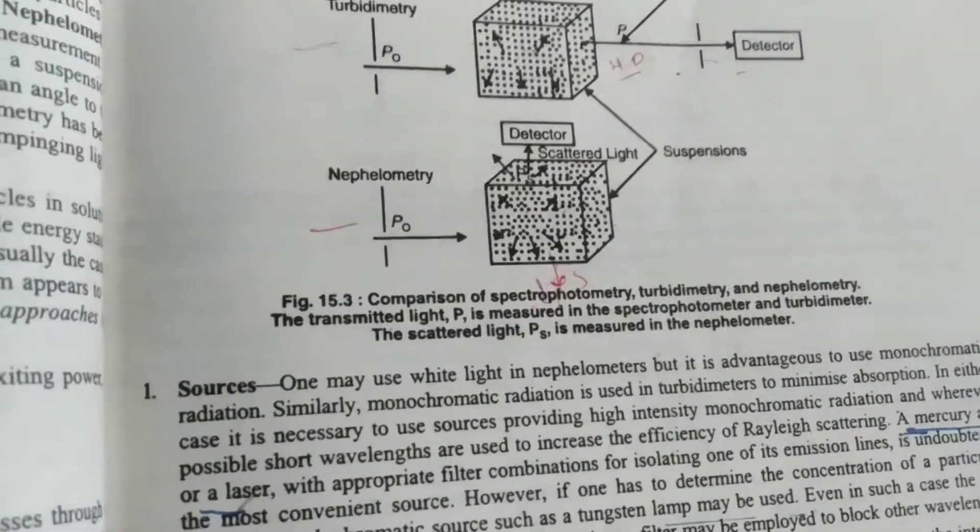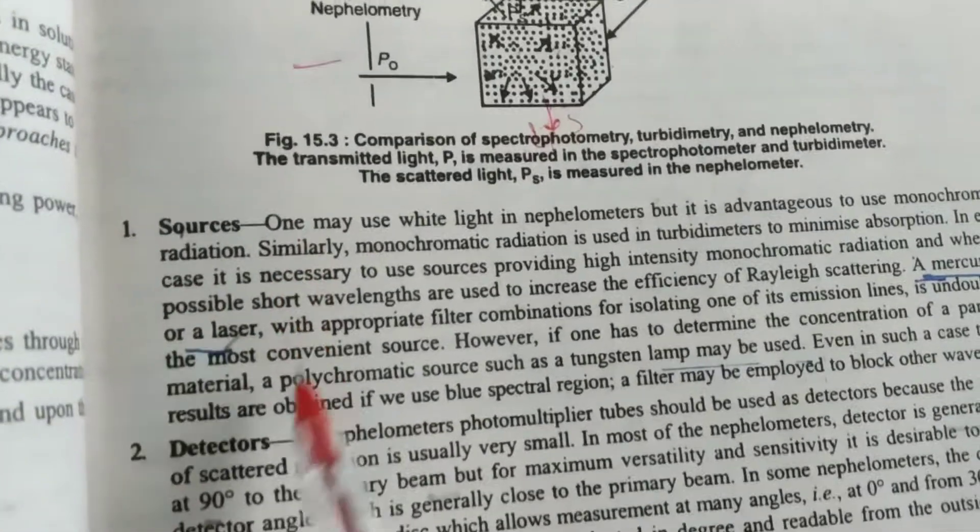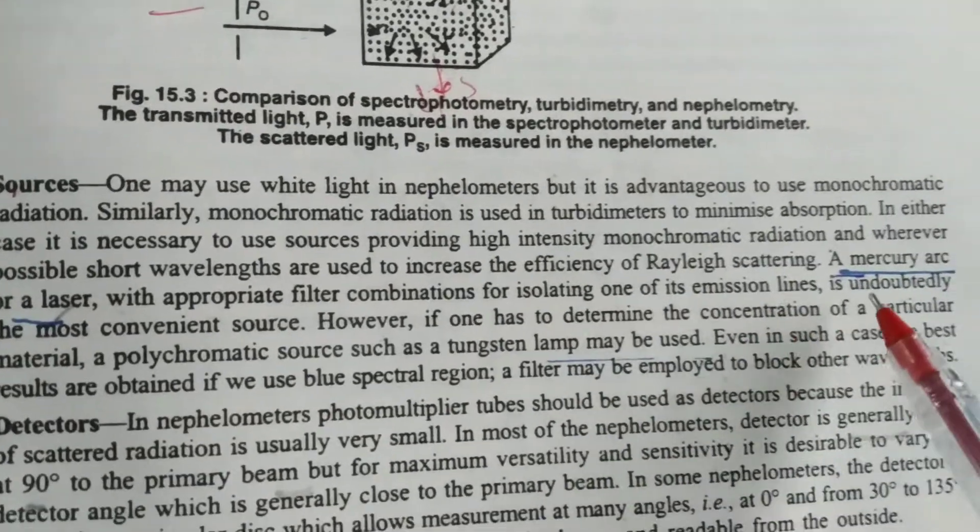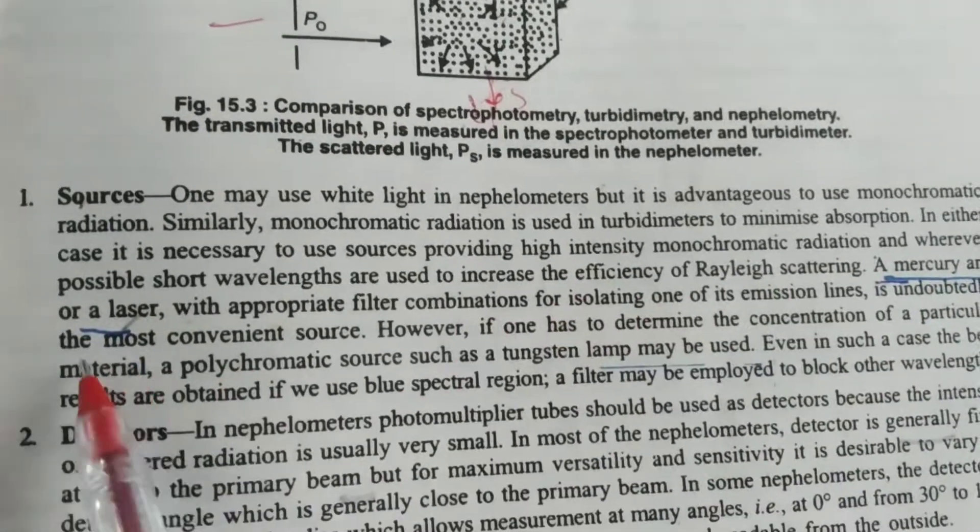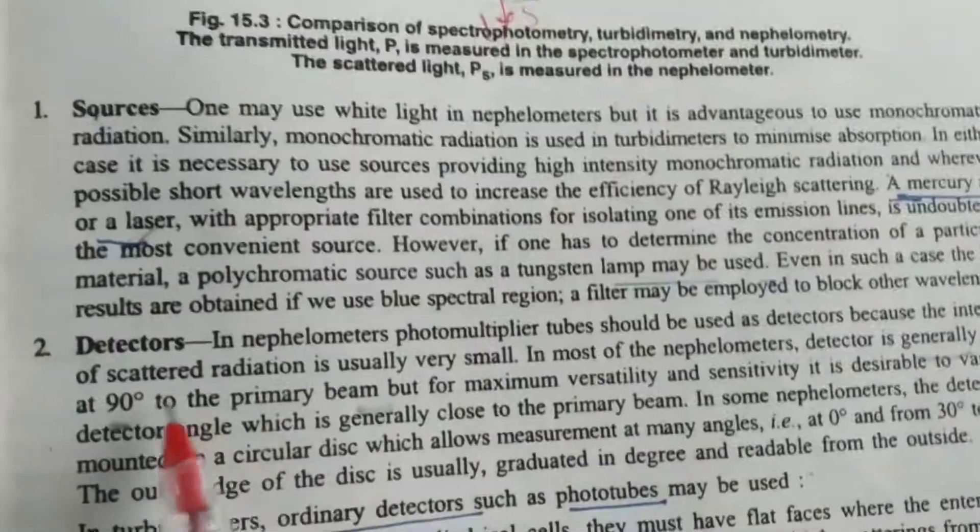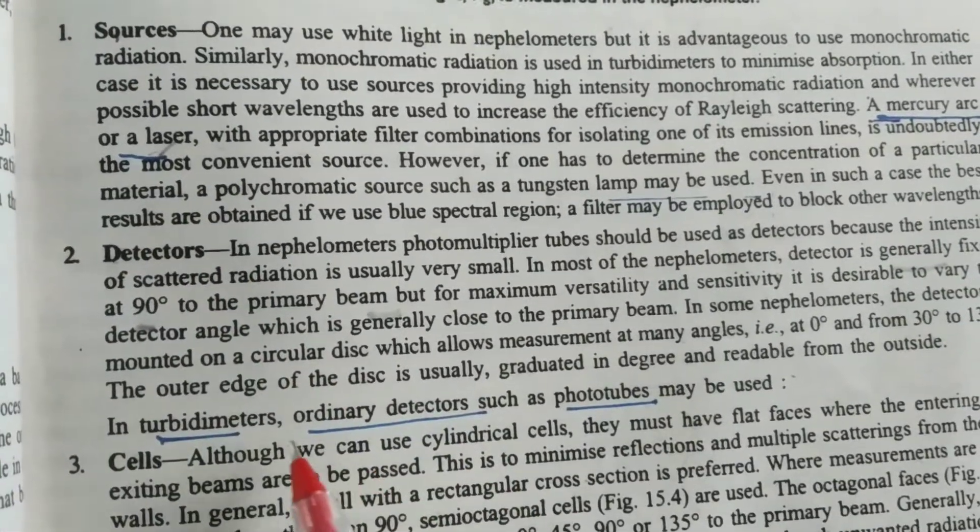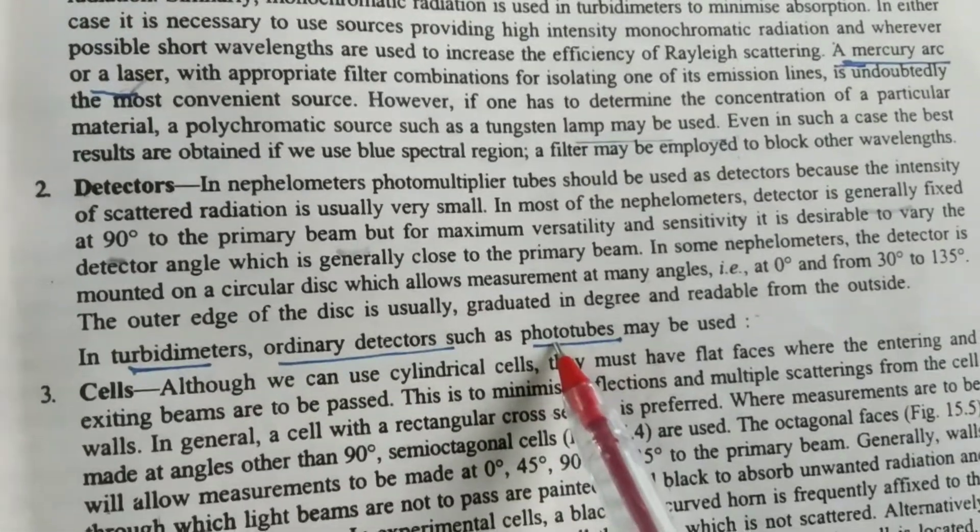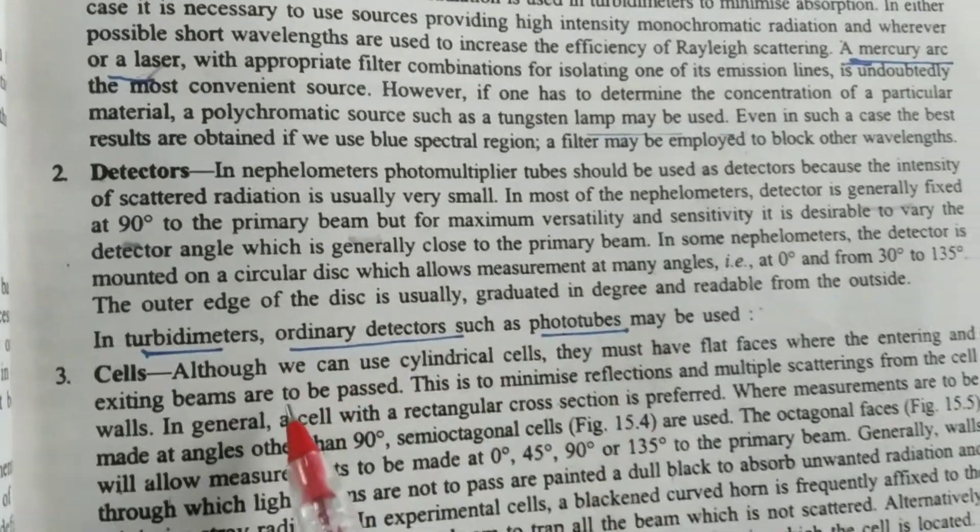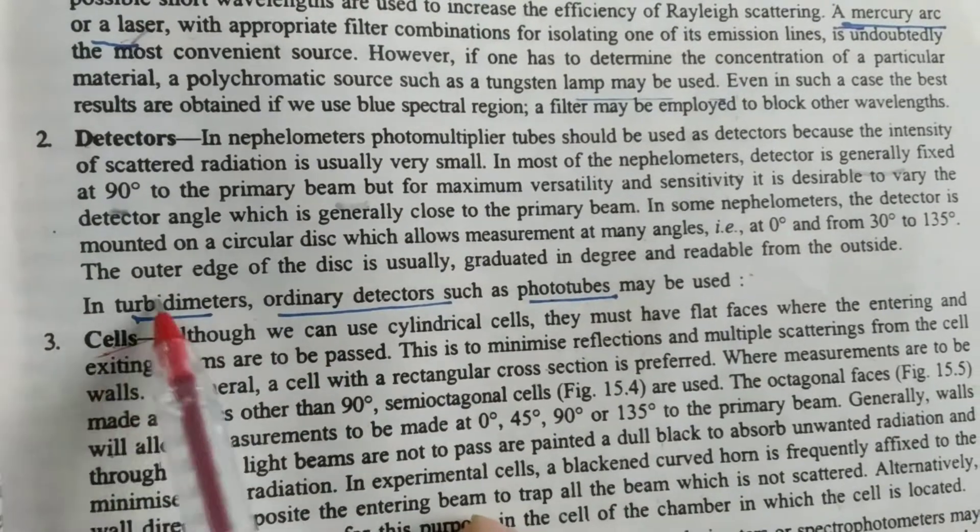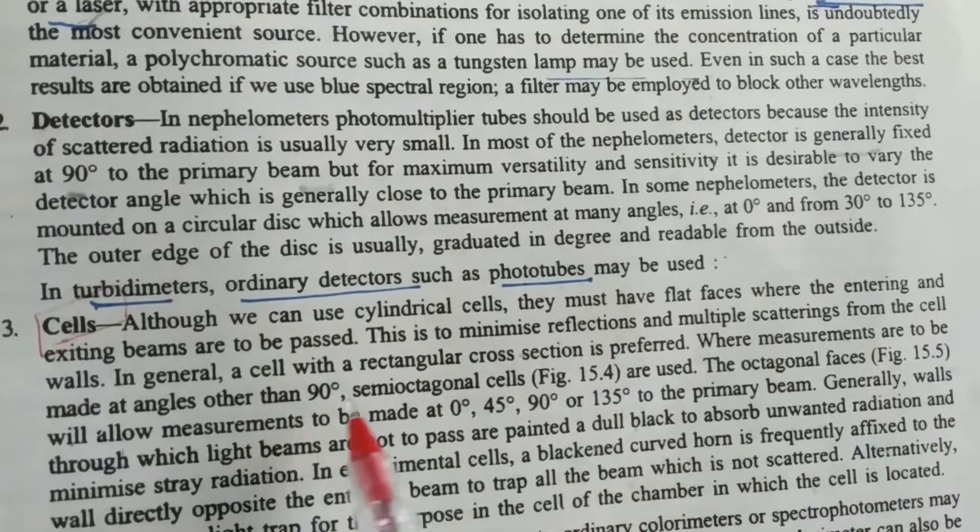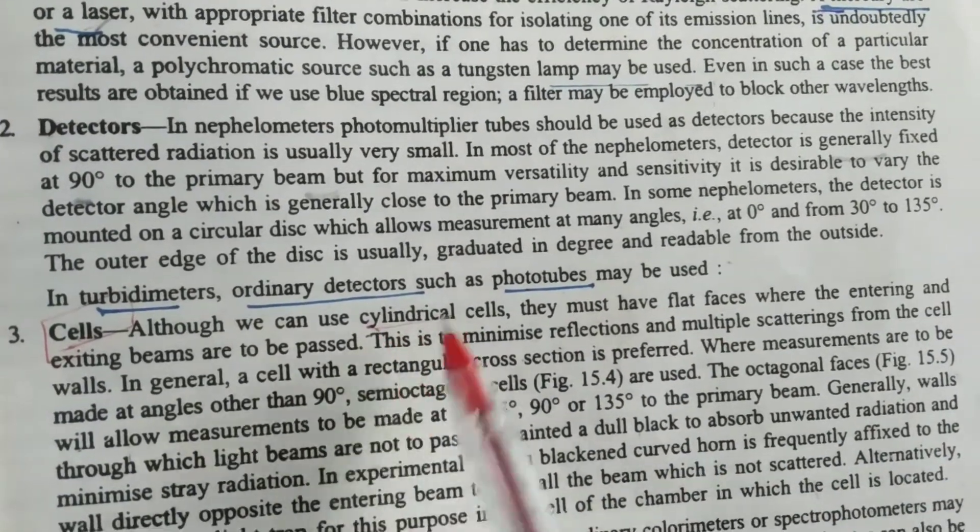The general instruments are light source, detector, and cell. In turbidimetry, the light sources generally used are mercury arc or laser. Detectors are ordinary detectors such as photo tubes. Cells or cuvettes are like quartz cuvettes, which are cylindrical cells.